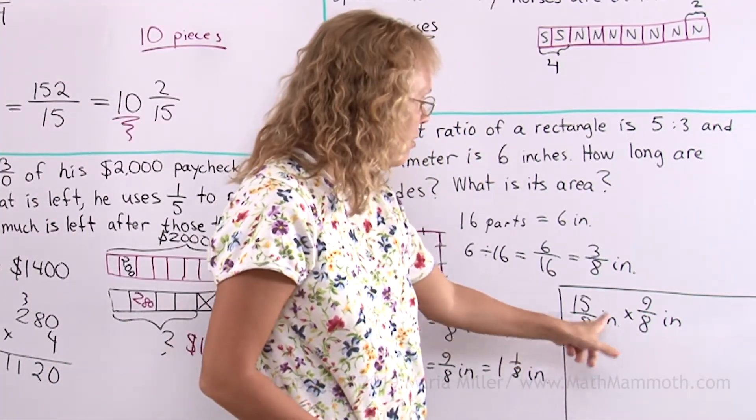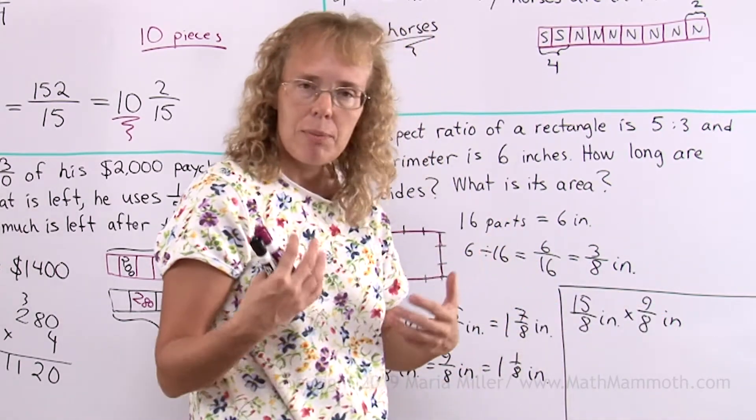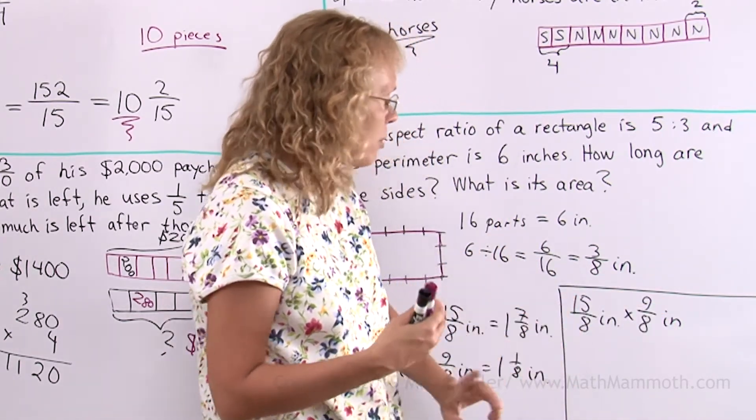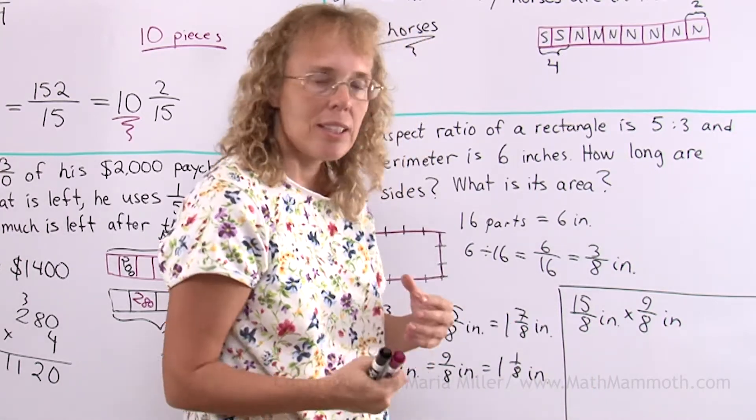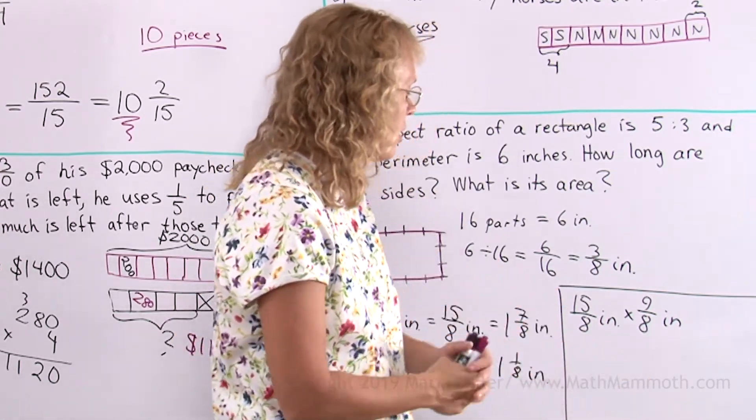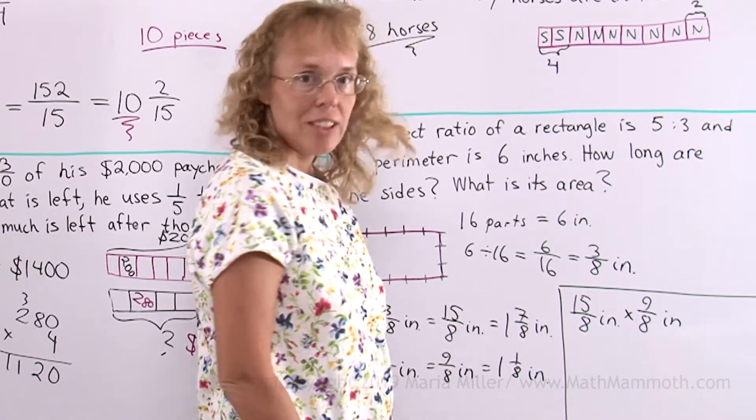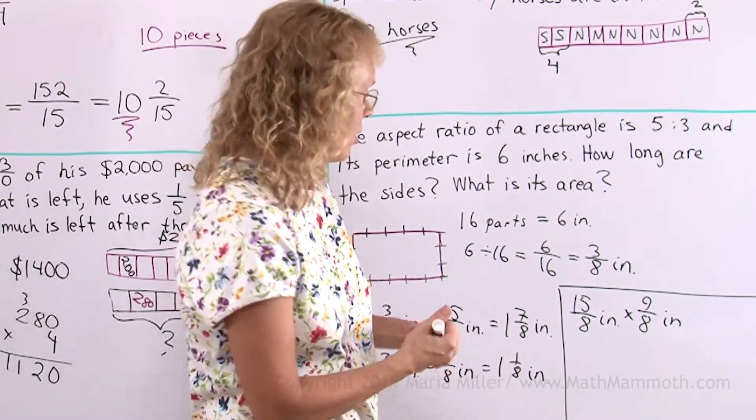Here 8, 15, 9. I'm thinking if I can simplify. 15 is 3 times 5. But no, they are not divisible by the same numbers. There are no common factors here. So I just multiply 15 times 9 and 8 times 8. That's all there is left to do.